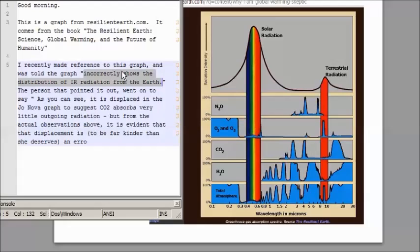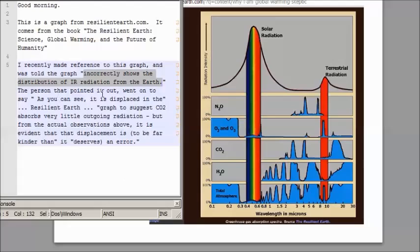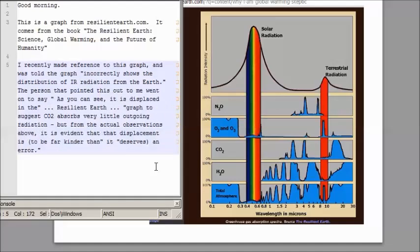I recently made reference to this graph and was told the graph incorrectly shows the distribution of infrared radiation from the Earth. The person that pointed this out to me went on to say, as you can see, it is displaced in the Resilient Earth graph to suggest carbon dioxide absorbs very little outgoing radiation. But from the actual observations, it is evident that the displacement is, to be far kinder than this graph deserves, an error.